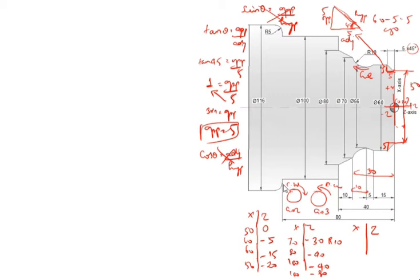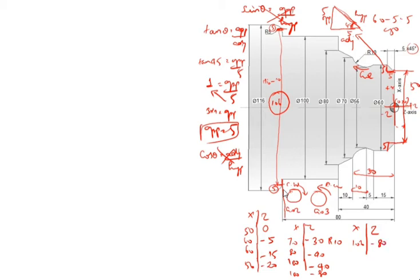After that, you come this side. This value is 80 and 5, so 80 plus 5 is 85. So Z value is minus 85. What is the X value? X value is 116, R is 5. This goes anticlockwise. Anticlockwise means this is G03.